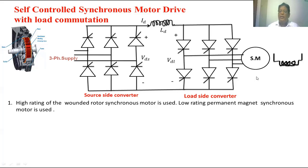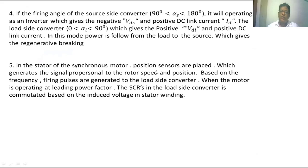For high rating synchronous motor drives, we use wound rotor synchronous motors. For low rating, the synchronous motor will be a permanent magnet synchronous motor. In the stator of the synchronous motor, position sensors are placed which generate a signal proportional to the rotor speed and position. Based on the frequency, firing pulses are generated to the load side converter. When the motor is operating at a leading power factor, the SCRs in the load side converter are commutated based upon the induced voltage in the stator winding.